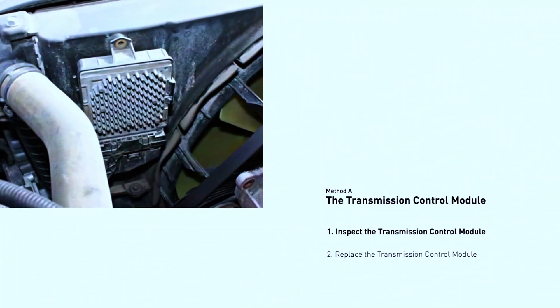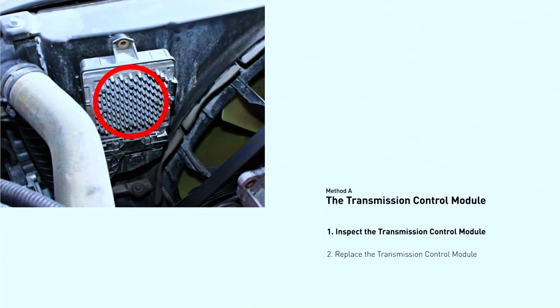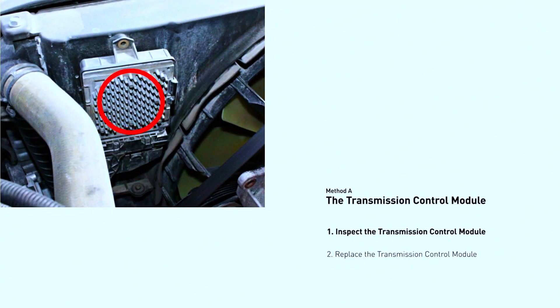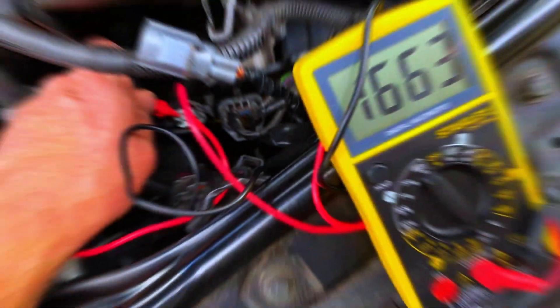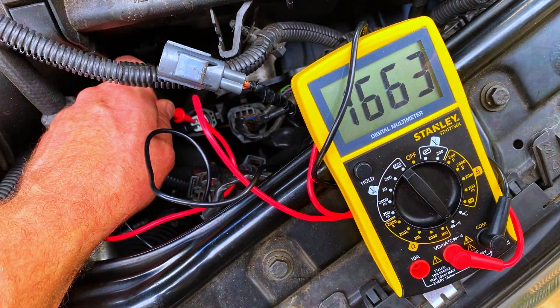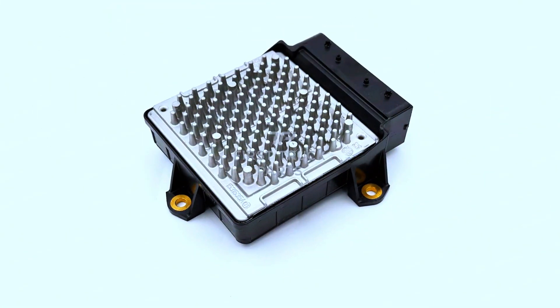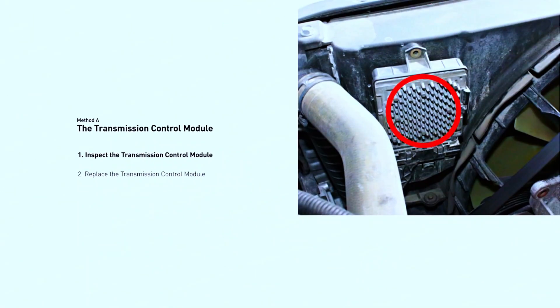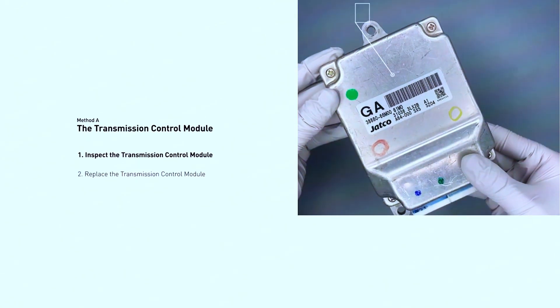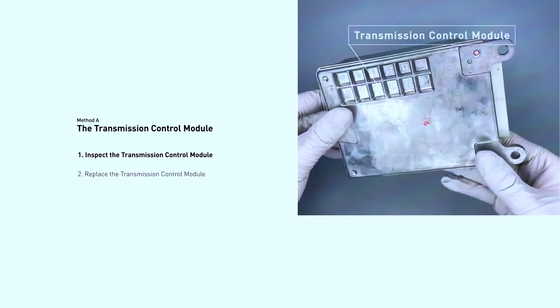Test the transmission control module. If the wiring looks good, the TCM might be at fault. Using a multimeter, check for proper voltage and continuity. If the TCM is faulty, it may need to be replaced.